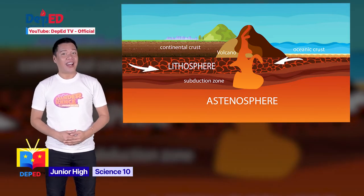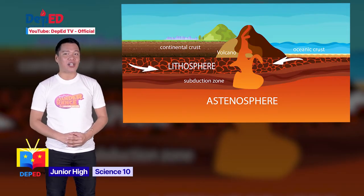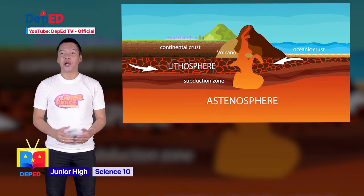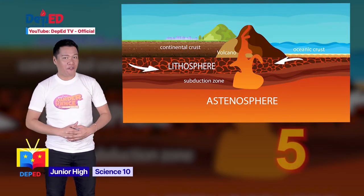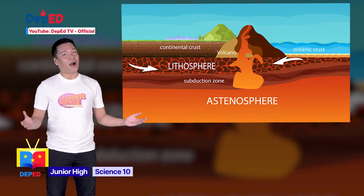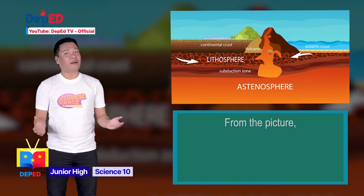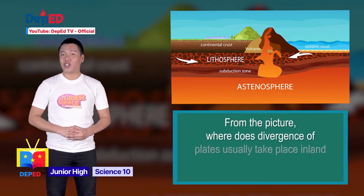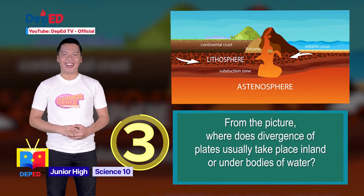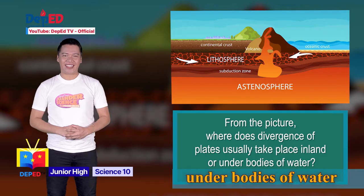What do you see? Can you see the arrows? What do the arrows imply? This diagram shows the separation of the lithospheric plates. I'm going to ask you four questions. Write your answer on a piece of paper. Are you ready? First question: From the picture, where does divergence of plates usually take place — inland or under bodies of water? The answer is under bodies of water.